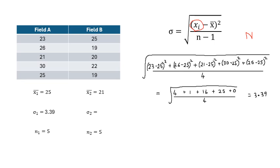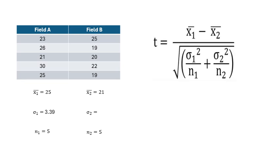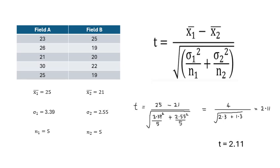What I'd like you to do is work out the standard deviation for field B — so pause the video, get pen, paper, and calculator, and work it out. That's sigma two. Now we can plug everything into the equation. We know X1 bar, we know X2 bar, we know the standard deviations, we've got N1 and N2. Plug it into the equation and you get 2.11. So my T-value is 2.11.